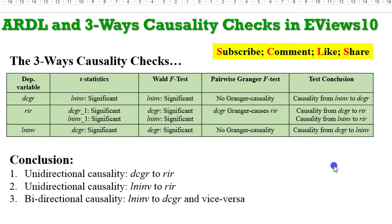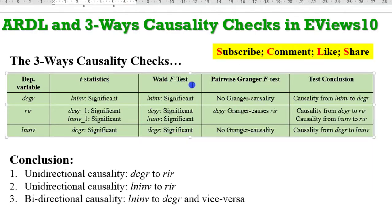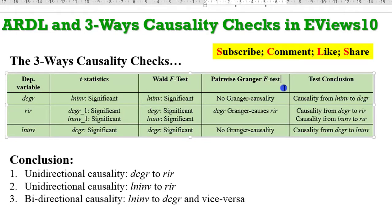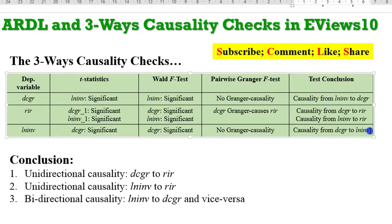To conclude our tutorial on how to check for causality in an ARDL framework, I have put together the various outcomes we obtained when we used different checks: T-statistics and F-Wald test in the last video, and pairwise Granger F-test in this video. In the overall conclusion, there is causality from investment to domestic credit growth, from domestic credit growth to real interest rate, and from domestic credit growth to investment. From the outcome of these three checks, there is a unidirectional causality from domestic credit to real interest rate, and also from investment to real interest rate. The only bidirectional causal relationship in this model is from investment to domestic credit growth, and vice versa.